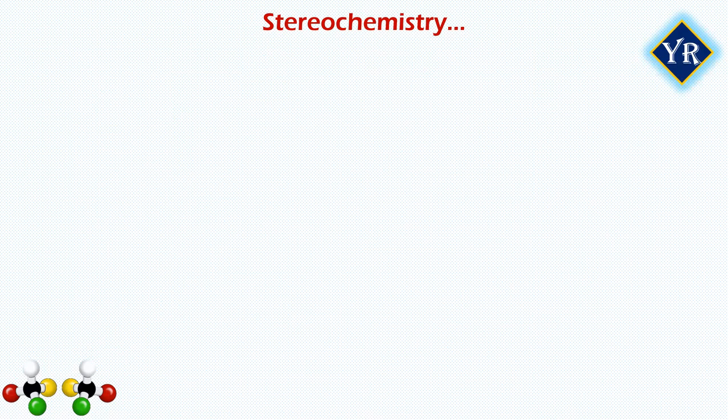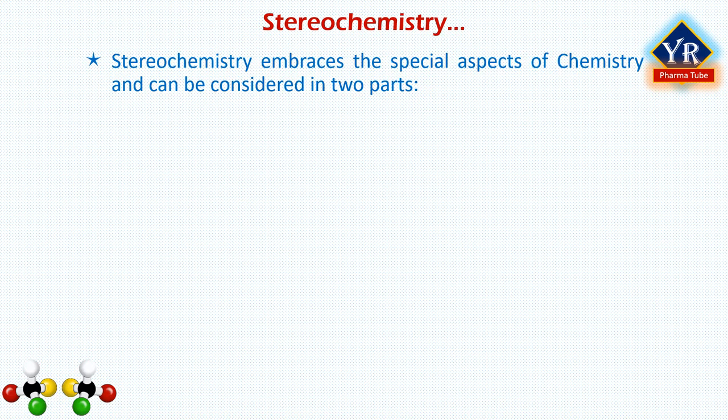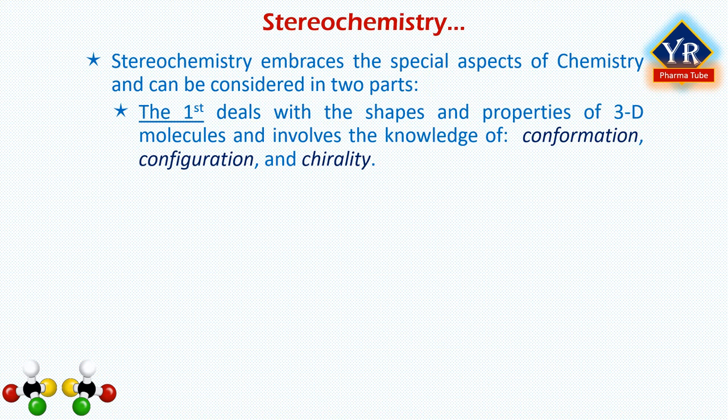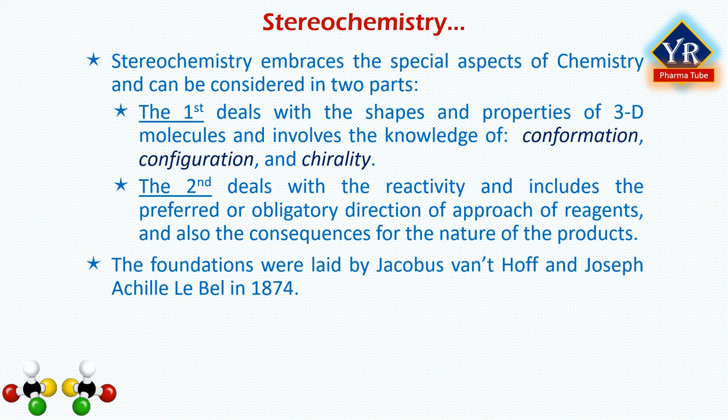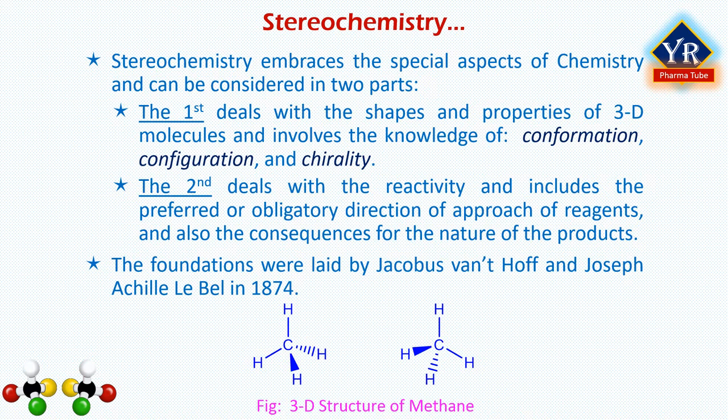Stereochemistry embraces the special aspects of chemistry and can be considered in two parts. The first deals with shapes and properties of mainly 3D molecules and involves knowledge of terms such as conformation, configuration and chirality. The second aspect deals with reactivity, including the preferred or obligatory direction of approach of reagents and the consequences for the nature of the products. The foundations of stereochemistry were laid down by Jacobs VanHoff and Joseph Achille LeBel in 1874, who independently proposed that the four bonds of carbon were directed toward the corners of a tetrahedron.